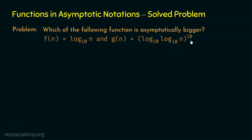In the last presentation, f(n) was log n base 10 and g(n) was log(log n base 10) base 10, and we found that f(n) is asymptotically bigger than g(n). But this time, g(n) is log(log n base 10) base 10 to the power 10. Can we still say that g(n) is asymptotically bigger than f(n)?